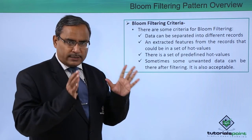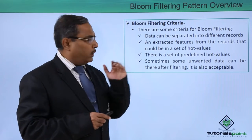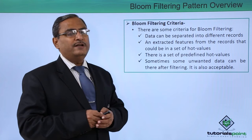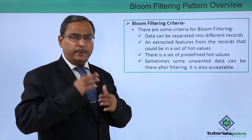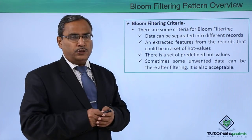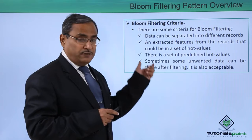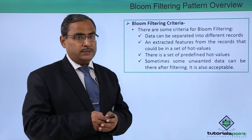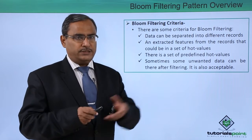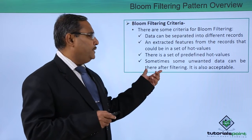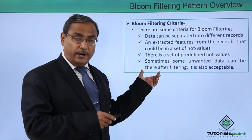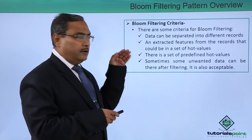Now, bloom filtering criteria. There are four criteria for bloom filtering. First, data can be separated into different records — data can be separated into multiple records according to our requirement. Second, an extracted feature from the records could be in a set of hot values; an evaluation function extracts this feature value from each record and searches it against the set of hot values. Third, there is a set of predefined hot values. Fourth, sometimes some unwanted data can be there after filtering and that is also acceptable.